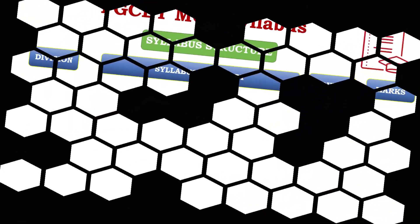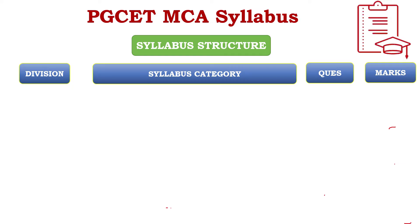The syllabus for MCA has been divided into five different units. In terms of examination, there are two divisions: Part A and Part B. Let us understand what is in Part A and Part B, and also what those five units are in the PGCT MCA syllabus.